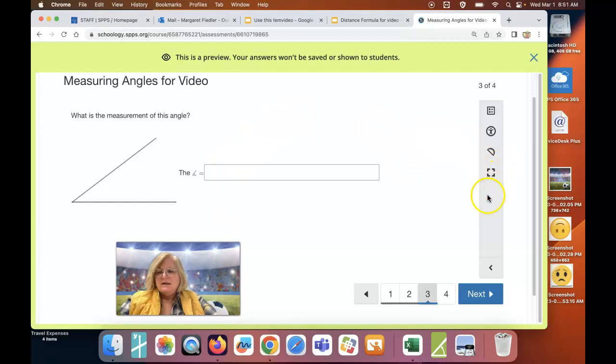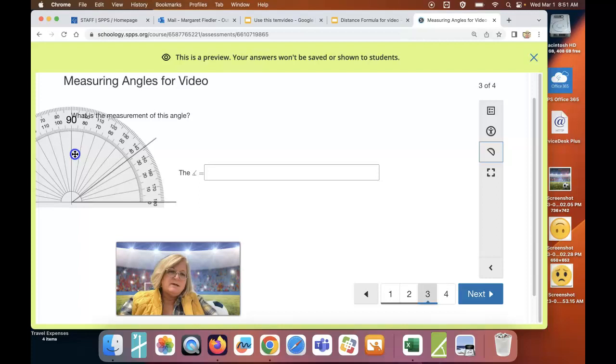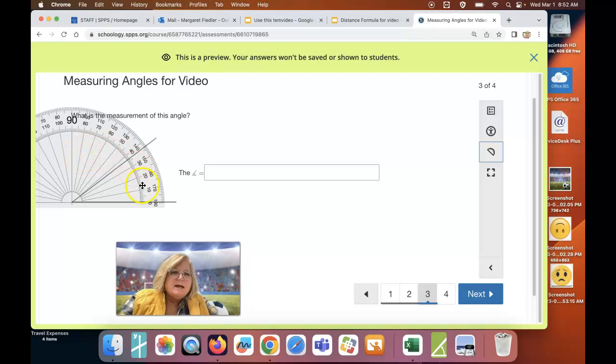Another one. So I'm clicking on my protractor, and I'm moving it over so that my center, which usually has a hole right there, is lined up along with my first line. And that looks like it's about 35, 36 degrees.